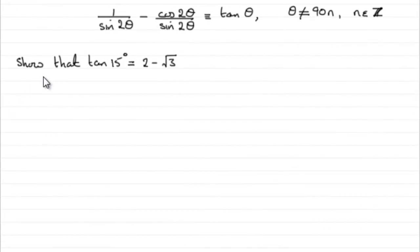Now for this next part, we've got to show that the tan of 15 degrees is equal to 2 minus root 3. And we can use the identity that we proved in the first part, because you can see that theta corresponds to the 15 degrees.